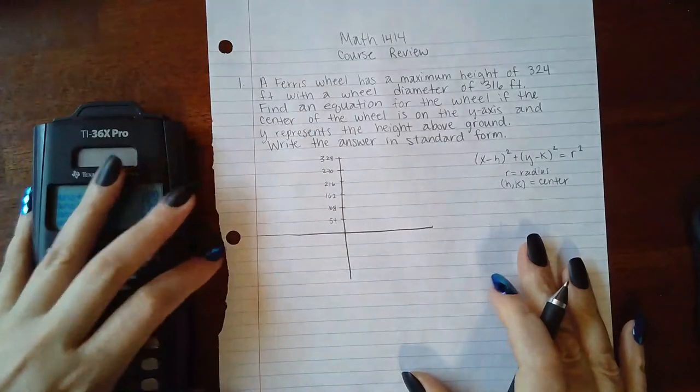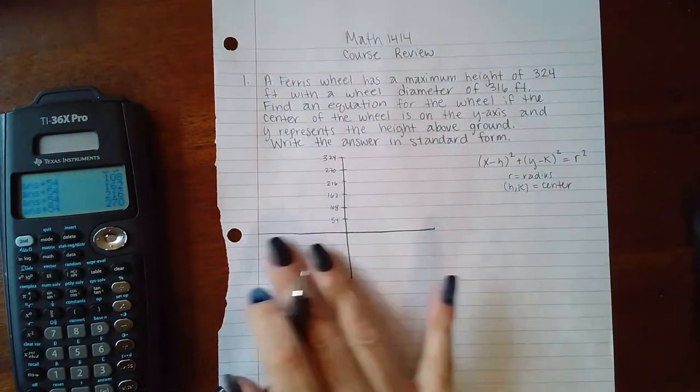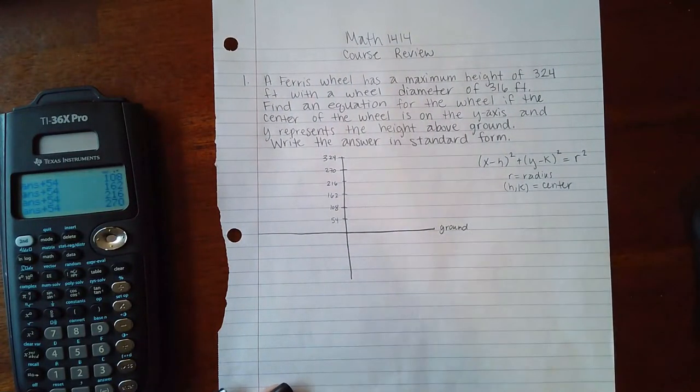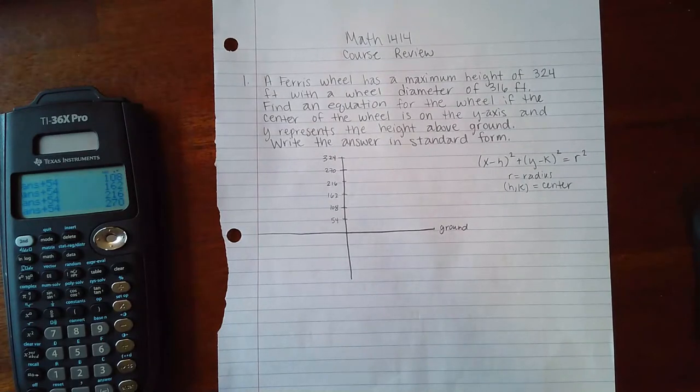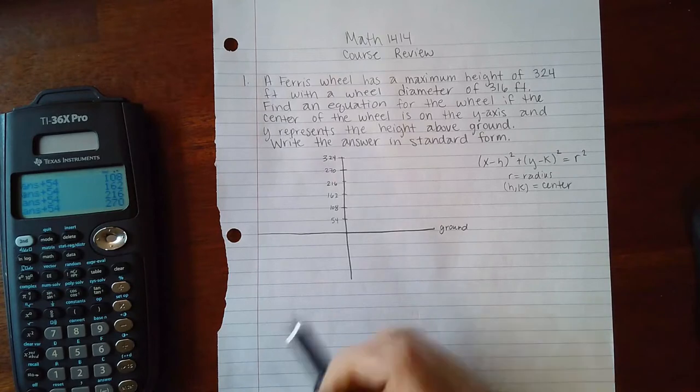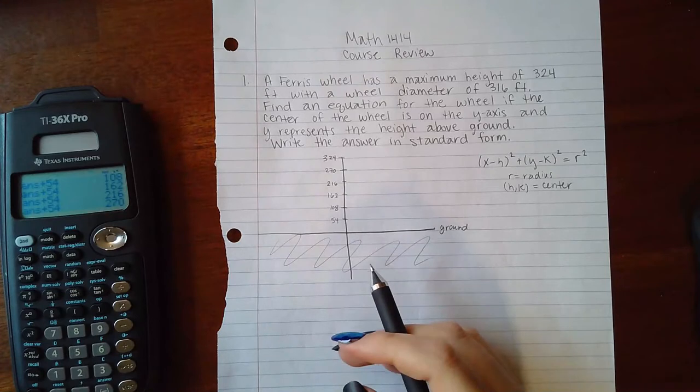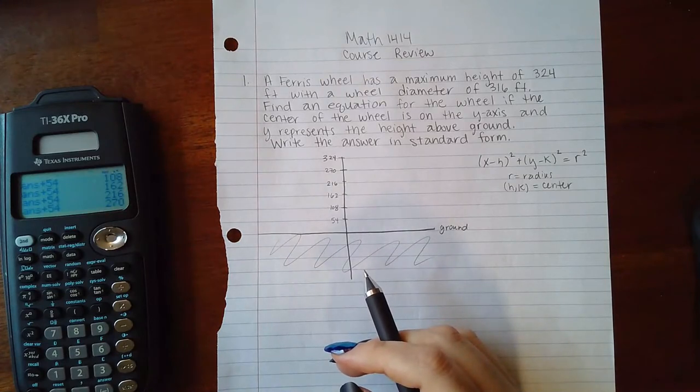Okay, so those are the y coordinates that we have here, and this is the ground, right? The x-axis is the ground and y represents the height above ground. Now we definitely don't have an underground Ferris wheel, so most likely I'm not going to be using this region of the graph.